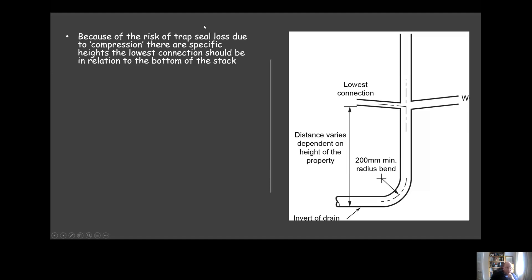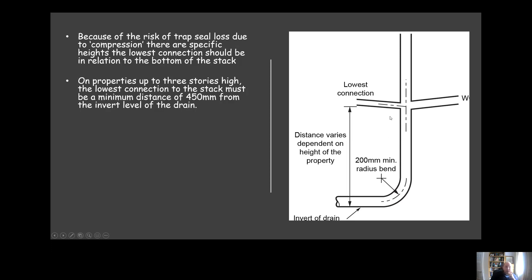Because of the risk of trap seal loss due to compression, there are specific heights that the lowest connection in relation to the bottom of the stack should be. In properties up to three stories, so one, two, or three stories high, the lowest connection to the base of the stack should be at least 450 millimeters up from the invert level of the drain.